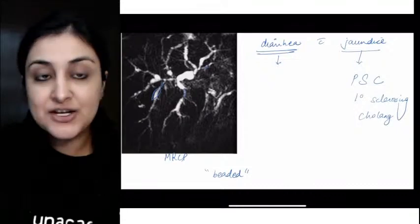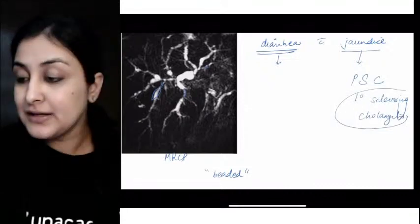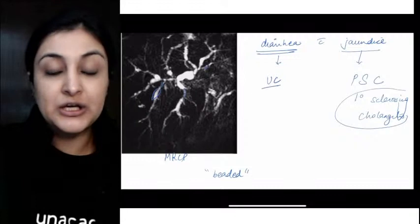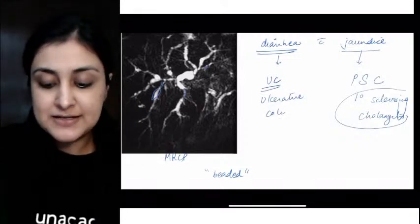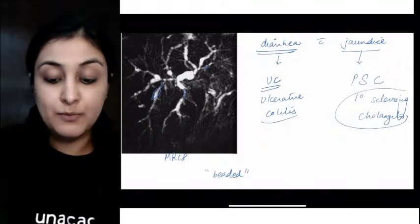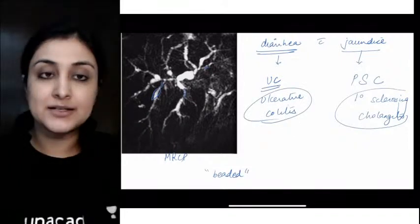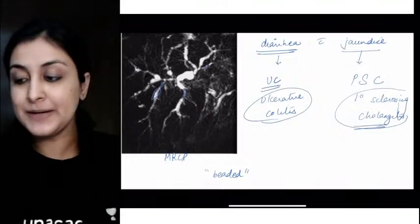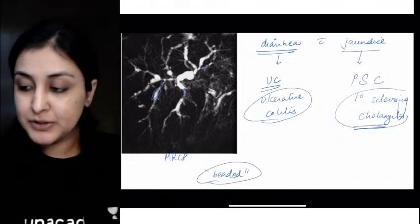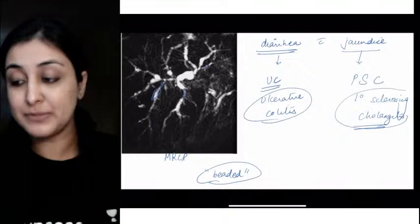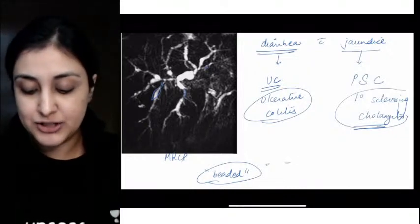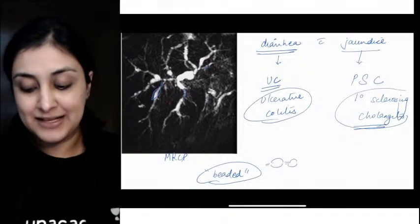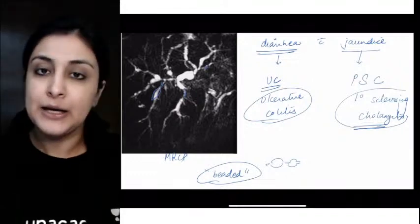The association that I was looking for that a lot of you have told me is because of UC, ulcerative colitis. Inflammatory bowel disease is related more commonly to UC rather than Crohn's disease. This is primary sclerosing cholangitis. Remember the beaded appearance. Somebody can call it string of pearls, string of beads. Doesn't really matter. As long as you know that there are multifocal strictures and dilatations. This is MRCP.